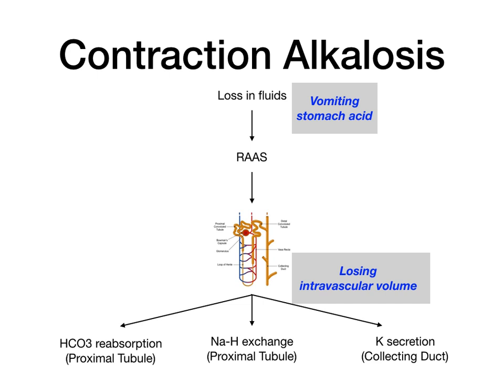If you understand what's happening in the big picture, you can infer what's going to change with your electrolytes. When you vomit up stomach acid, you're not only losing intravascular volume — you're also directly losing chloride. When you lose intravascular volume, you reabsorb bicarb, so bicarb goes up. You increase your sodium-hydrogen exchange, so sodium increases and hydrogen goes down. And because of that, you get increased potassium secretion at the collecting duct, so potassium goes down.